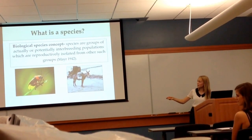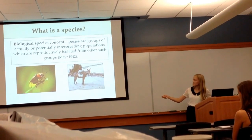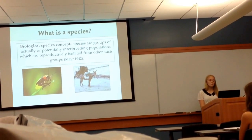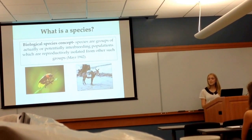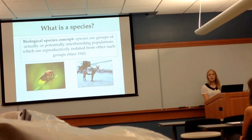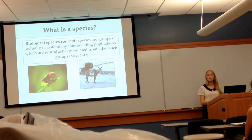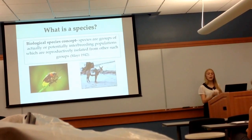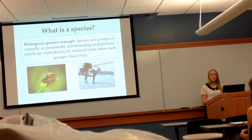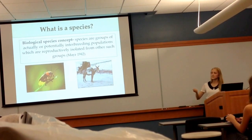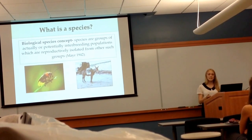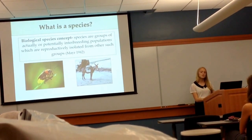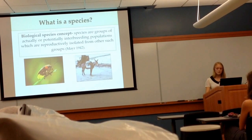Here I've shown a lightning bug to represent an example of behavioral isolation. In different species of lightning bug, the males have different flashing patterns, and the females will only mate with males that have the right pattern. On the right is a mule, which is a classic example of the hybrid sterility isolating mechanism.